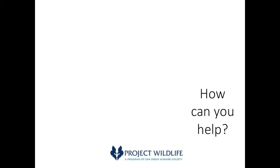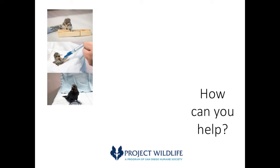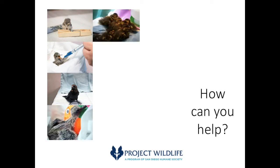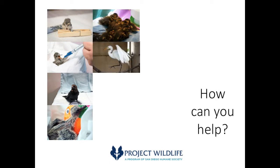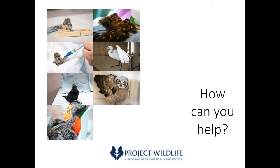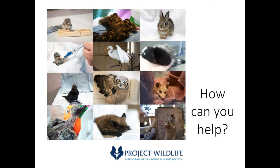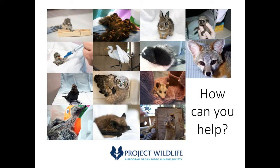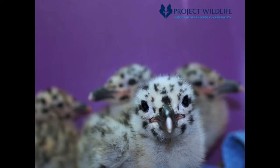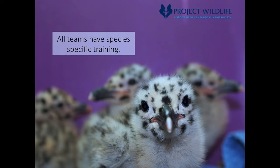So how can you help as a satellite care volunteer? You can join a species-specific team. We have a songbird team, which cares for hundreds of different species of birds, a hummingbird team, a corvid team caring for crows, ravens, and jays, a pigeon and dove team, a duck team, a seabird and shorebird team caring for many different species of water birds, a raptor team taking in multiple different species of hawks and owls, a bat team, a rabbit team, a skunk team, an opossum team, a squirrel and small mammal team caring for squirrels and small mammals like gophers, voles, moles, wood rats, and more, a raccoon team, and a fox team. Each team will require species-specific training and have different needs as far as space requirements, amount of time needed, and amount of training required.